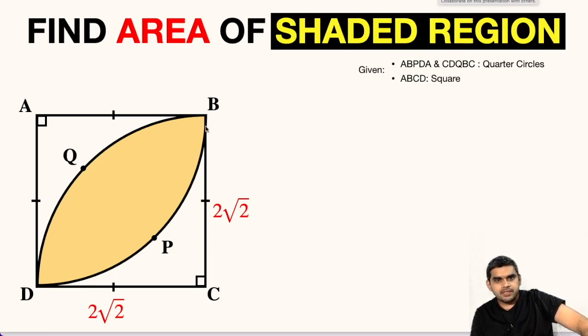In this question, a square ABCD is given. Each side of this square is 2 root 2 units. Also, there are 2 quarter circles whose centers are at point C and A respectively. We are asked to find the area of this common region between the 2 quarter circles, that is this yellow shaded region.